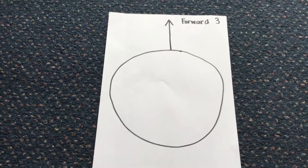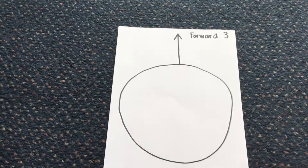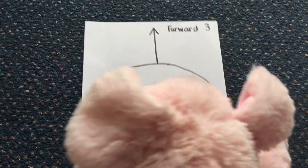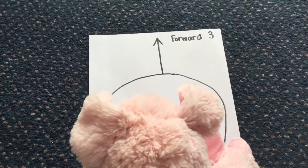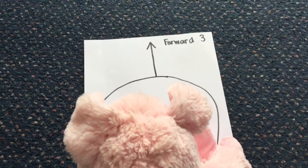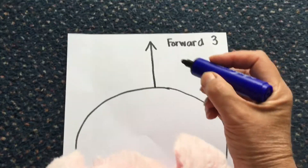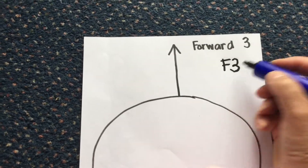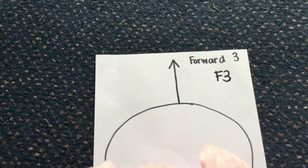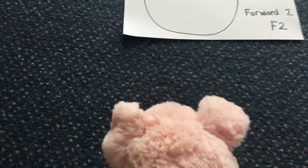The first instruction Percy has got says forward three. So let's go Percy — you go into the circle. We need to go forward three. Now when you write instructions you might get a bit tired, so instead of writing forward three let's just write F3 — F for forward and three. Okay Percy, your first instruction is to go forward three. Let's go: one, two, three.